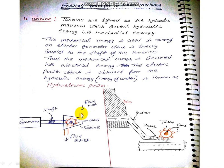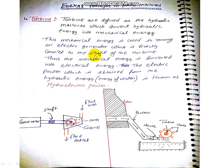We have the fluid inside, and with the help of the fluid, we have the Turbine rotated. The hydraulic energy is converted into mechanical energy because the Turbine is rotating. Now we connect a generator to the shaft — the shaft is rotating and the generator is working to convert mechanical energy to electrical energy. The job of the turbine is to convert hydraulic energy into mechanical energy. This mechanical energy is used in running an electric generator which is directly coupled to the shaft.